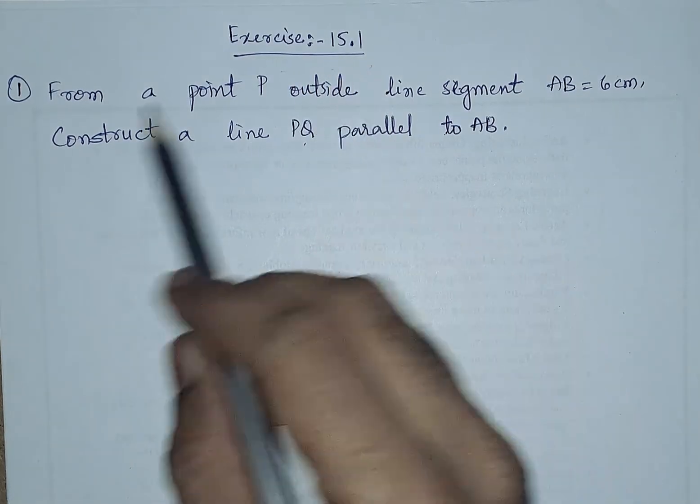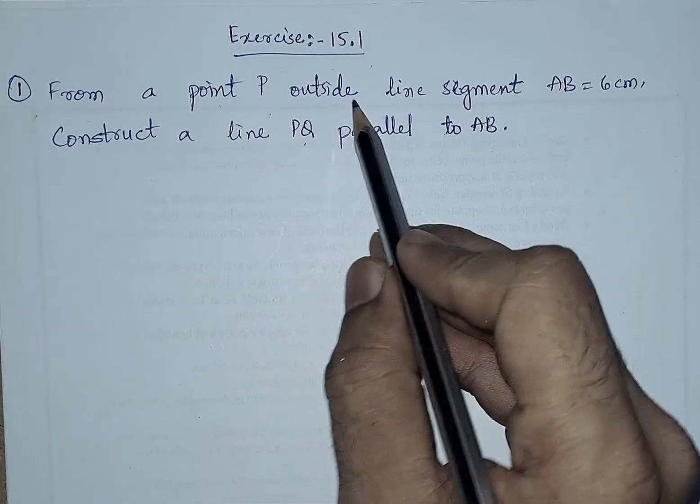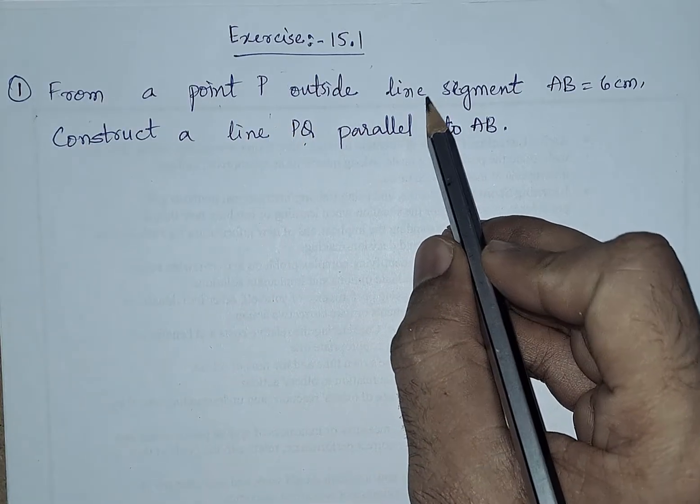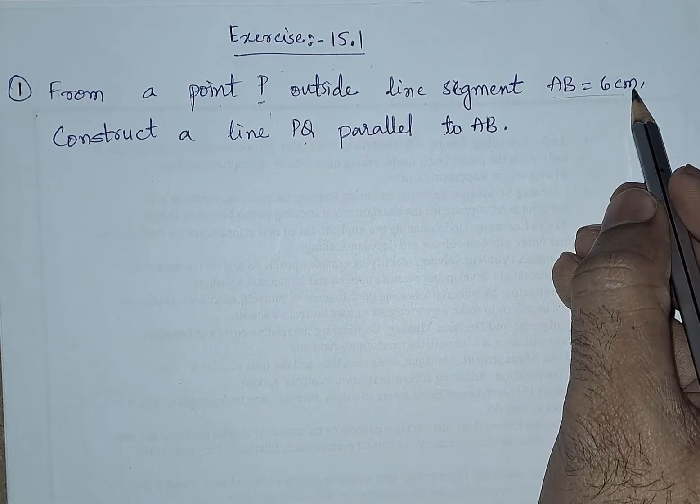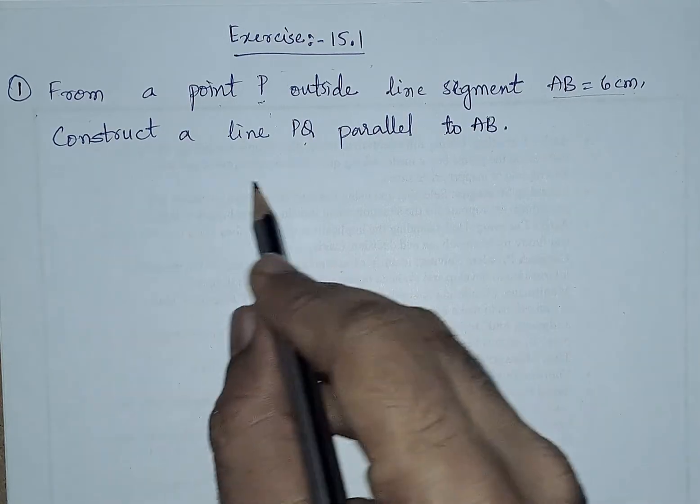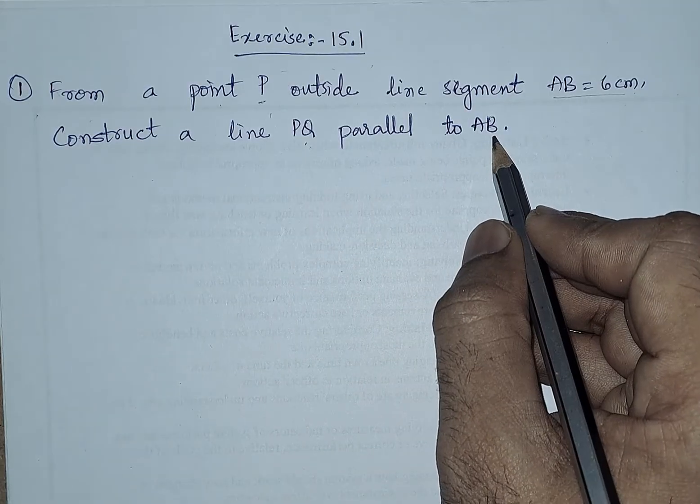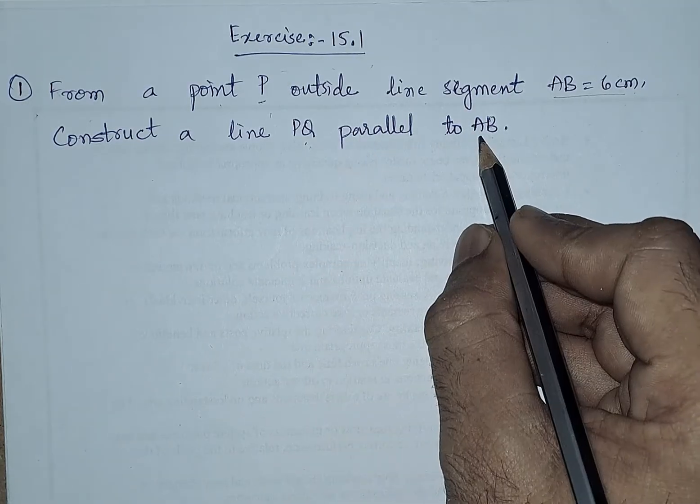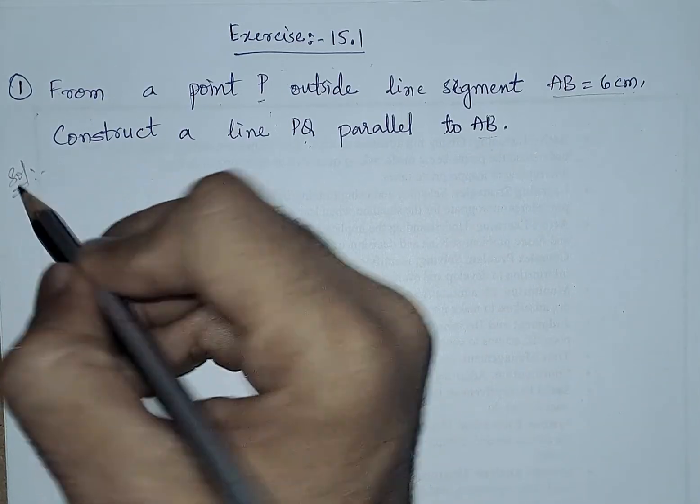Exercise number 15.1, first problem: From a point P outside line segment AB, which is of 6 centimeters, construct a line segment PQ parallel to AB. So we need to construct another line which is parallel to AB. Let us start the solution.